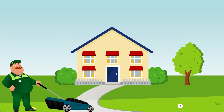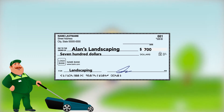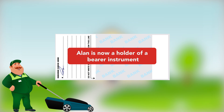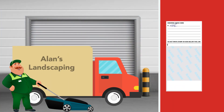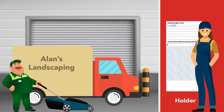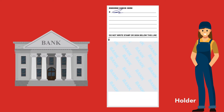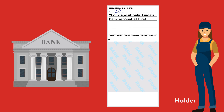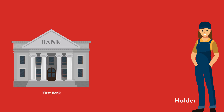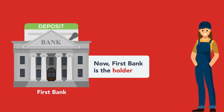For example, assume Alan is a landscaper who does work on Lisa's house. After Alan completes his work, Lisa writes a check to him. Alan endorses the check by signing the back, writing nothing more than his signature. Alan is now a holder of a bearer instrument. He then uses the check as a money substitute to pay for some truck repairs, and negotiates the check to Linda of Linda's Repair Service, who is now the holder of the check. Linda takes the check and writes a restrictive endorsement on the back: for deposit only, Linda's bank account at First Bank, account number 123456789. She deposits the check in her savings account at First Bank. Now First Bank is the holder.